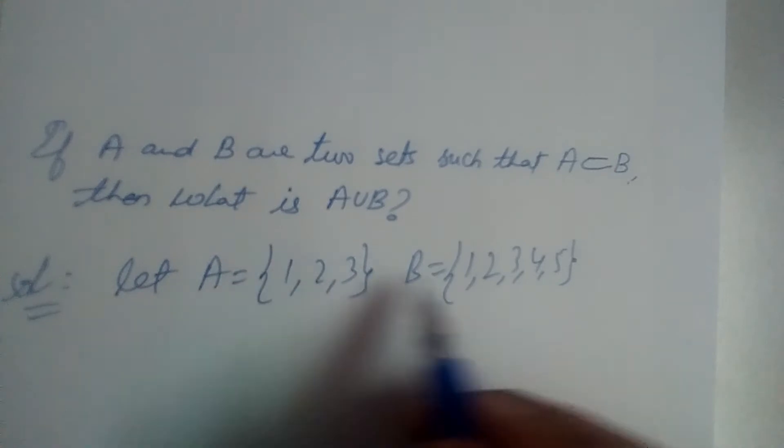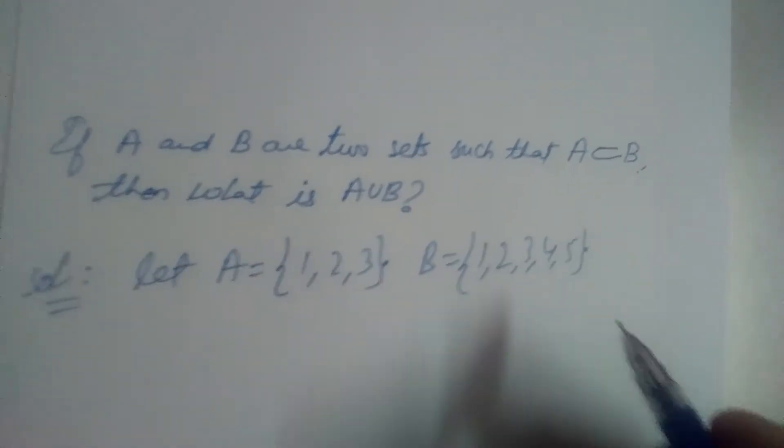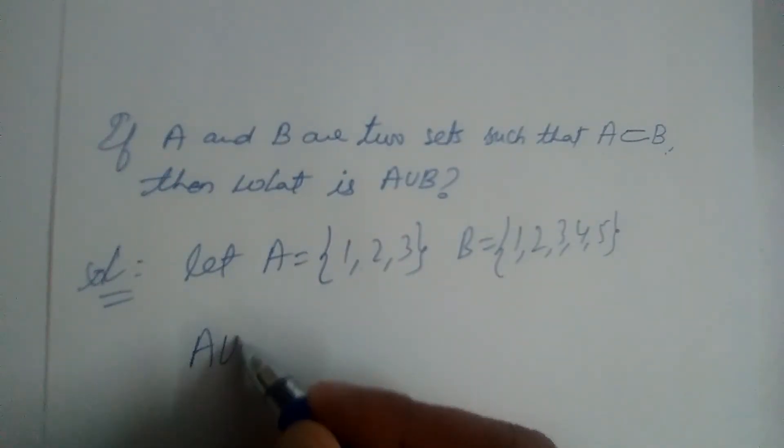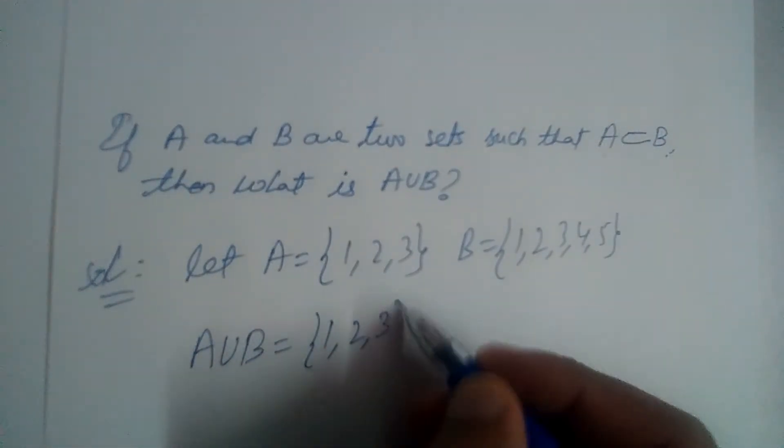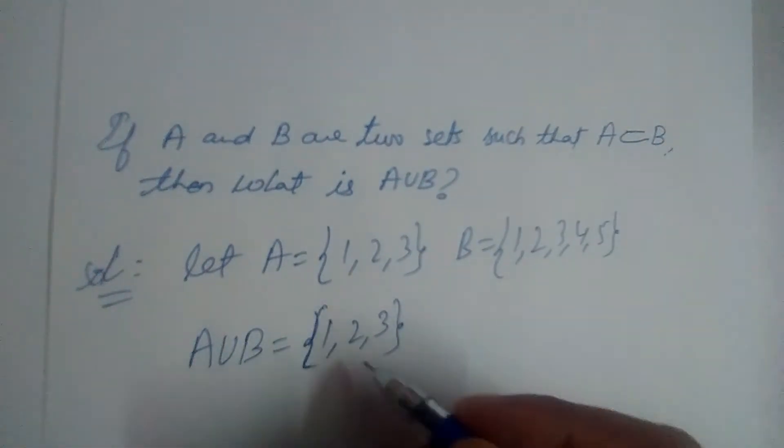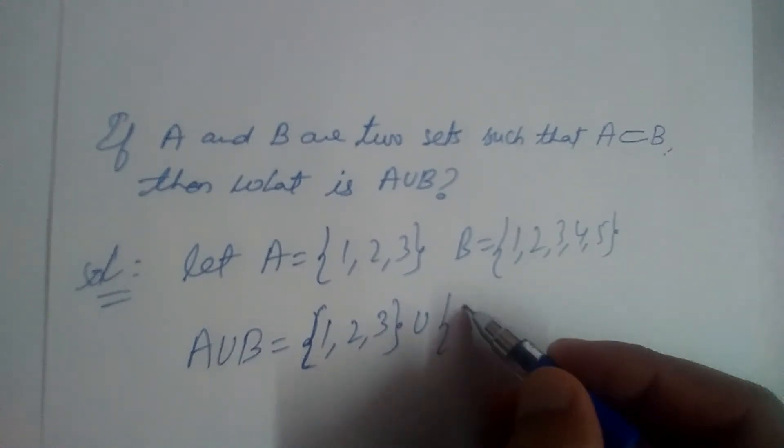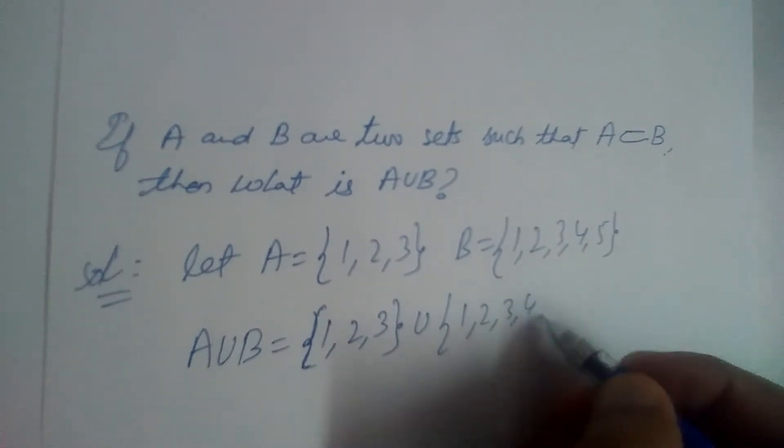Alright, then we need to find A union B. Let us find A union B. A is {1, 2, 3} and union B is {1, 2, 3, 4, 5}.